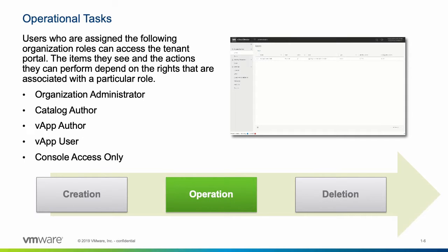By default, new users and/or groups can be assigned to one of the following global roles: Organization Administrator, Catalog Author, vApp Author, vApp User, or Console Access Only. Users that are assigned to a role within vCloud Director are able to access the tenant portal. Each of these roles has a different set of privileges that will be discussed in the following demonstration.